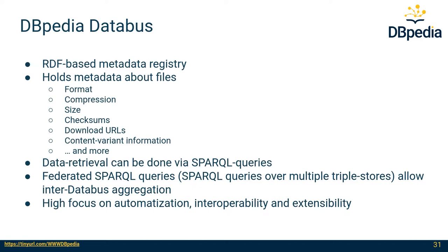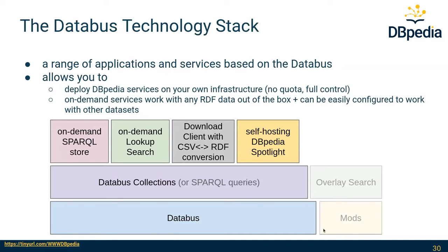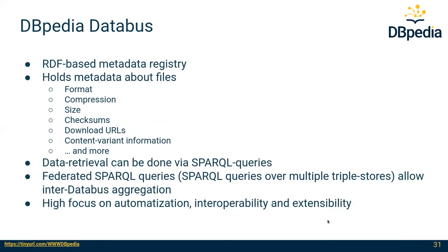Another big benefit of using SPARQL as the interface is that SPARQL can be sent against multiple SPARQL endpoints at the same time — you could query multiple databases and aggregate data across instances. The DBpedia Data Bus has a high focus on automatization, interoperability, and extensibility. All actions on the Data Bus are accessible via an API so you can automate all processes. It's highly interoperable since the main interface is SPARQL, which is very flexible. There's also an entire mods framework for extending and modifying metadata, which we won't cover today.